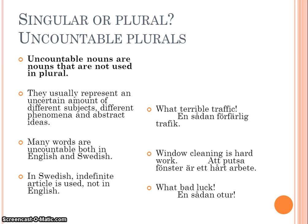We have some words that could be difficult to know if they're singular or plural, and those are known as uncountable nouns. Uncountable nouns are nouns not used in plurals. They usually represent an uncertain amount of different subjects, different phenomena, and abstract ideas. An example of this is: what terrible traffic? Many words are uncountable both in English and Swedish, as in window cleaning is hard work.